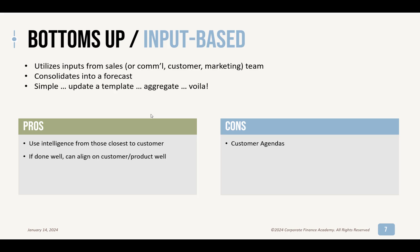The cons: customer agendas. A customer may say they need more than they actually do just because they want to make sure it's available. If your sales people go to someone and they say 'I need 10,000 gallons of paint,' they might only need 8,000, but they want to make sure you have all their stuff. And more importantly, you probably have sales bias — some people want to beat their forecast, some are overly pessimistic or optimistic. You have this big human element that bubbles up. One pro not on this list: in a business that's heavily customized, this can work well.